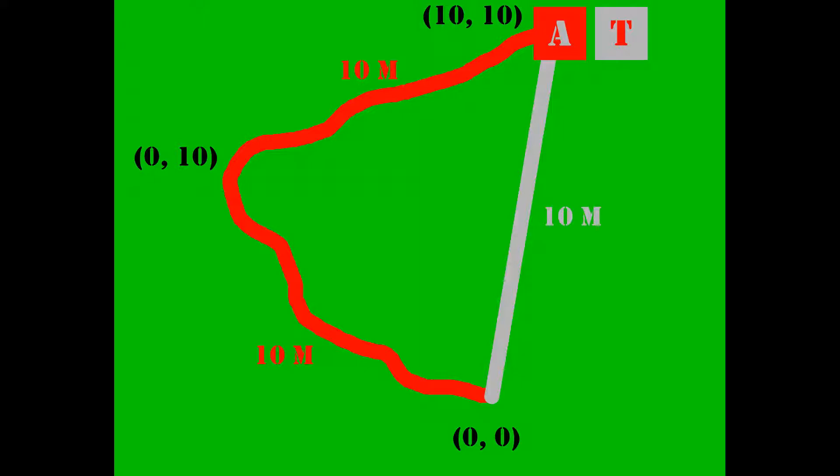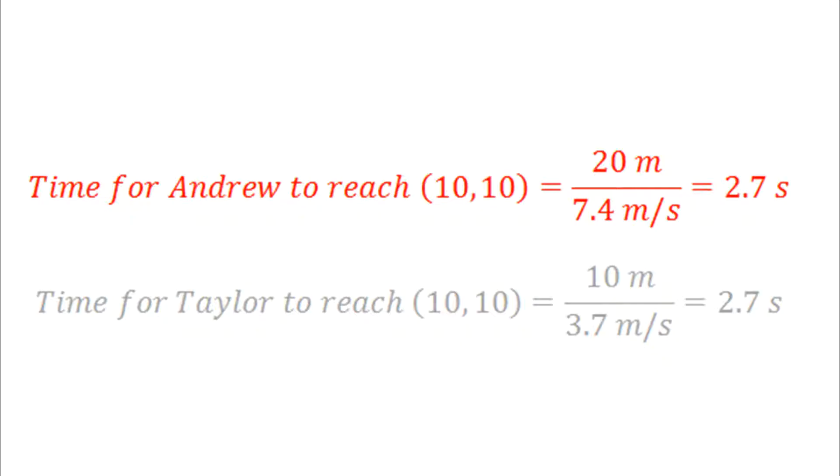For simplicity's sake, let us set up a situation where Andrew runs a triangular pattern from the original point (0,0) to the point (0,10), and then to the point (10,10). Using his average speed of 7.4 meters per second, he can get there in 2.7 seconds.